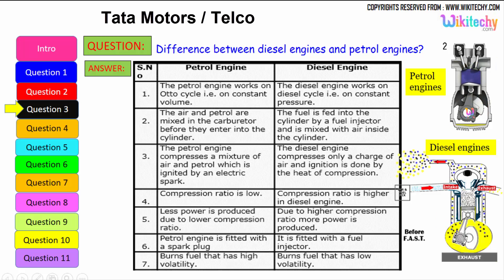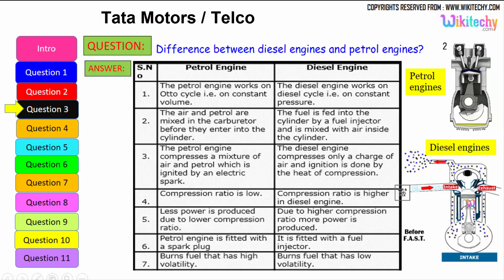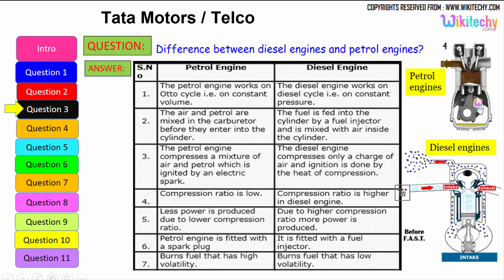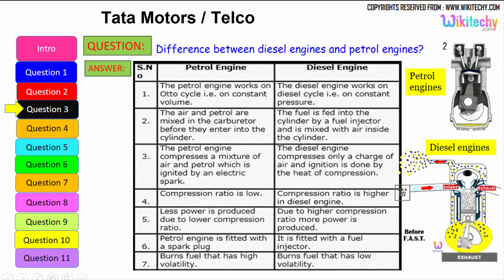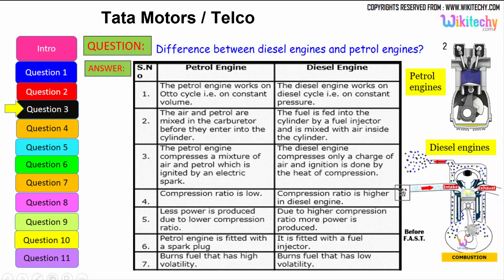The petrol engine compresses a mixture of air and petrol, which is ignited by an electrical spark. The diesel engine compresses only a charge of air, and ignition is done by the heat of compression. The petrol engine has a lower compression ratio, whereas the diesel engine has a higher compression ratio — producing more power. The petrol engine is fitted with a spark plug, while the diesel engine is fitted with a fuel injector.